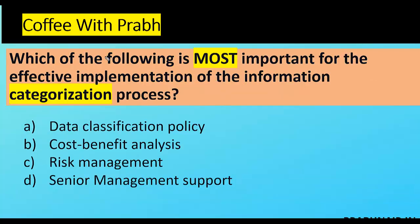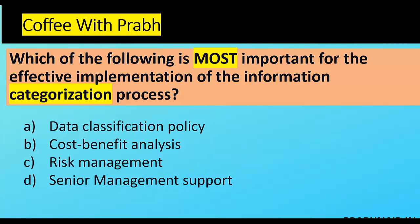Next coffee shot: which of the following is most important for the effective implementation of an information categorization process? Option A is data classification policy — without that we cannot drive the classification system. Option B is cost-benefit analysis — relevant when implementing controls. Option C is risk management — a driving factor to identify gaps. Option D is senior management support. We can adopt A, B, and C, but without management support there is a possibility you cannot implement anything in the organization.